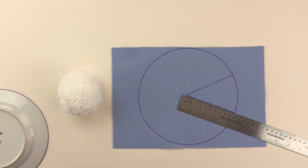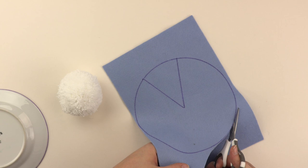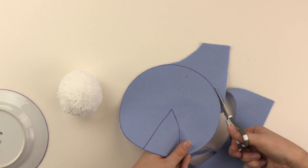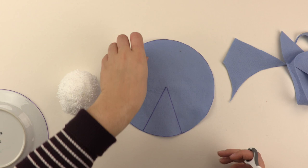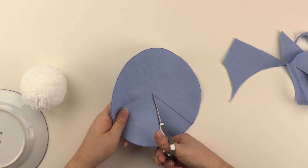I'm then just going to use my scissors and then cut around my circle. Then I'm just going to cut down these lines here. So that's what you should end up with.